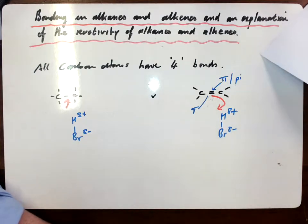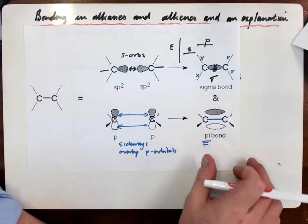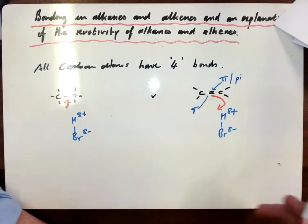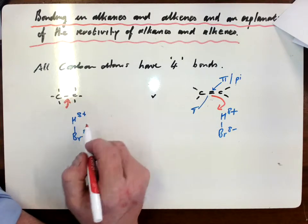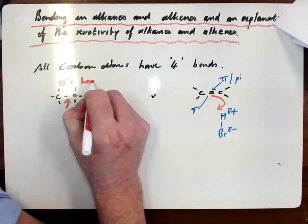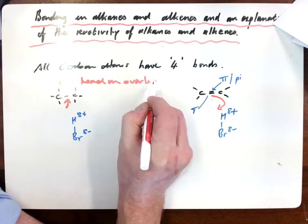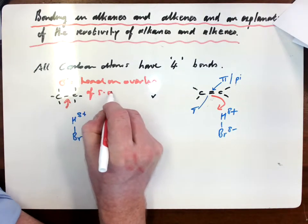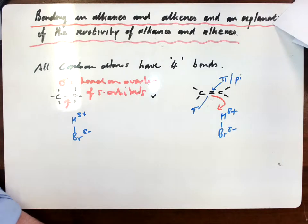The other thing that is going on in here that prevents alkanes from being reactive, is the sigma bond we spoke about earlier, the head-on overlap of the S orbitals. That's a really strong and efficient overlap of orbitals. Therefore, that bond is very, very strong.